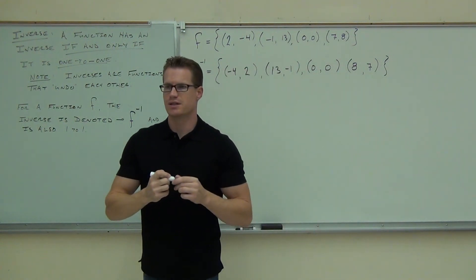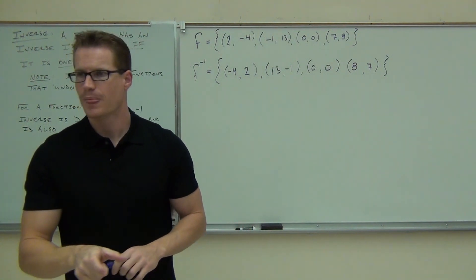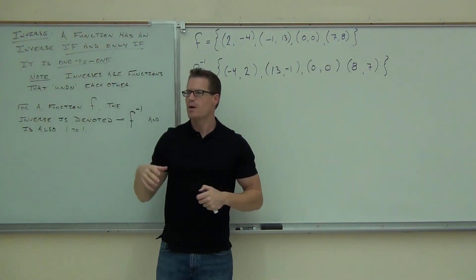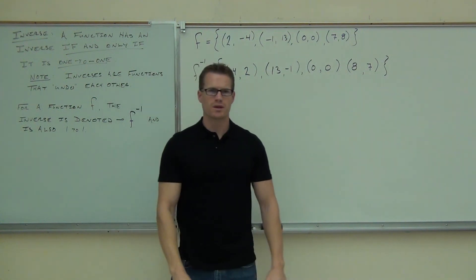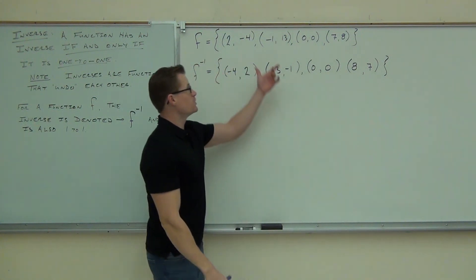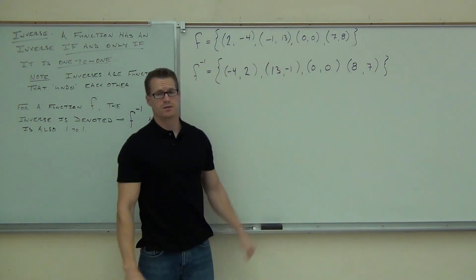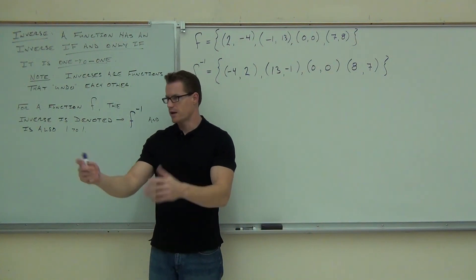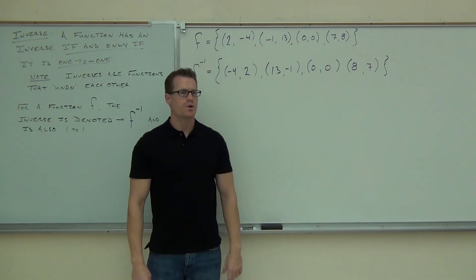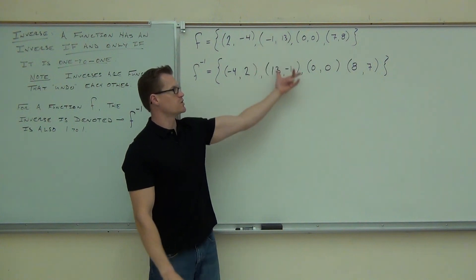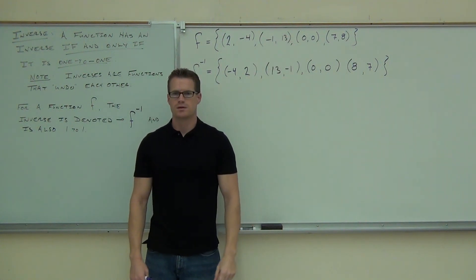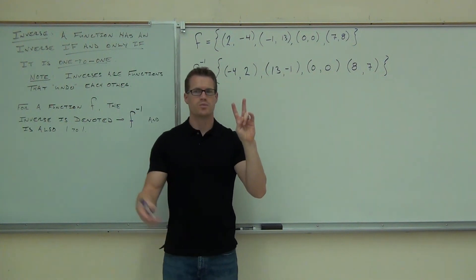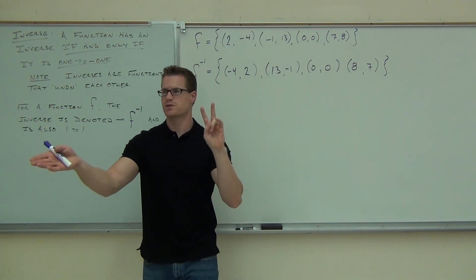Basically, what an inverse does is give you back what you started with. In other words, from one function to its inverse, you are switching the inputs and outputs — switching the x and y coordinates. You're going backwards, switching input and output.